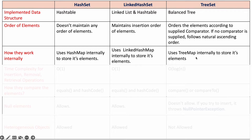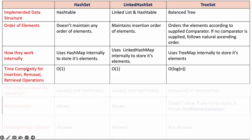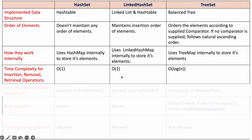Regarding time complexity for insertion, removal, and retrieval operations: HashSet internally uses HashMap, so all operations take O(1) time. LinkedHashSet also takes O(1) time for insertion, removal, and retrieval operations. TreeSet takes O(log n) time. So HashSet and LinkedHashSet are better than TreeSet in terms of performance.